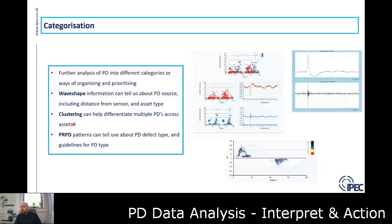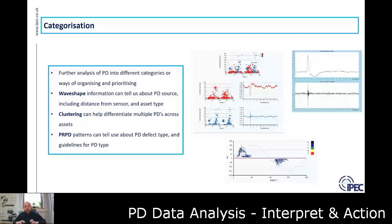The other technique is clustering — this is when we're seeing two PDs on one asset. It helps with wave shape analysis by separating those PDs. You can have automatic algorithms built into permanent monitoring systems for this. If you look at the top chart, the PRPD is very busy, but there are actually two PD sources in there. Running it through the clustering algorithm, the output below shows two different PDs detected by one sensor — the top one resembling a cable PD from further away, and the bottom one more typical of a local switchgear PD.